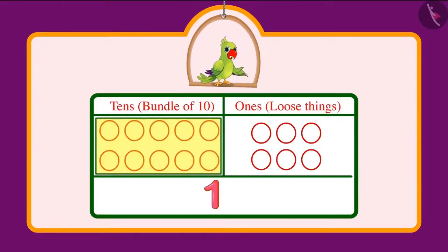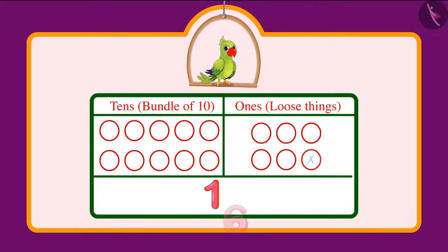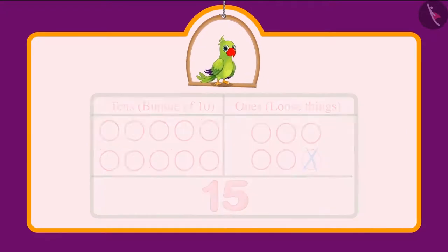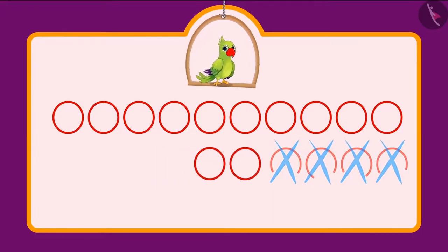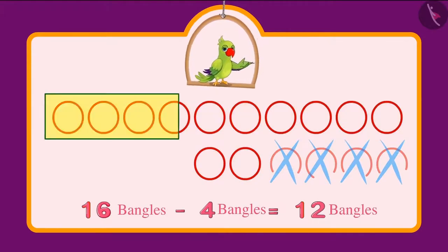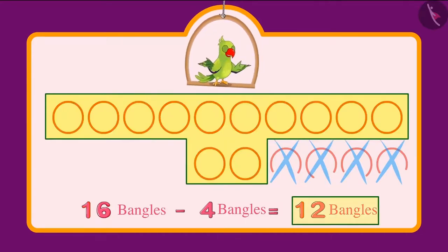16 consists of one tenth and six ones. When we subtract one unit from 16, we are left with one tenth and five ones, that is 15 bangles. This means that if you subtract four bangles from 16 bangles then we will get 12 bangles. So Chotu has a group of 10 and two more bangles, that is 12 bangles in total.